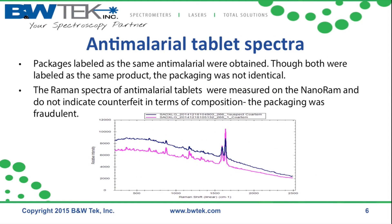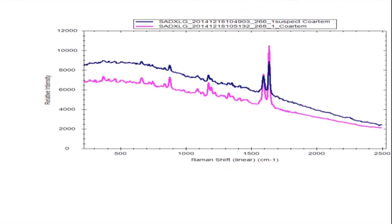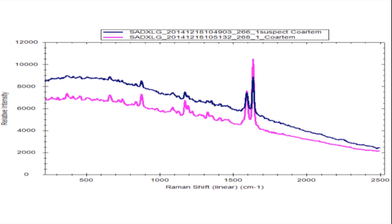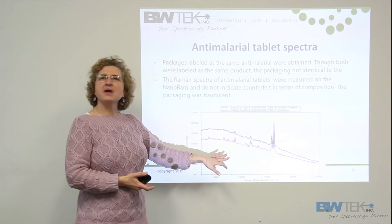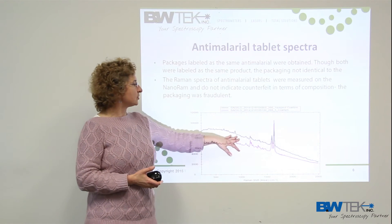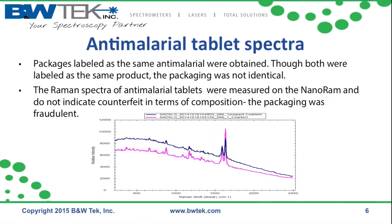Here I'm showing the spectra measured from an antimalarial where tablets were found in different containers — one packaging was clearly counterfeit, with incorrect printing and verbiage, though the overall color of the package was correct. When we measured the Raman spectra of the tablets from each of these packages, we were not able to say that one was missing the active ingredient; the tablet itself appeared to be properly compounded and formulated.